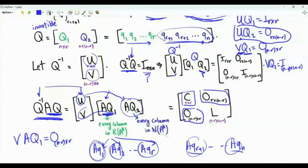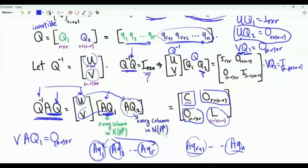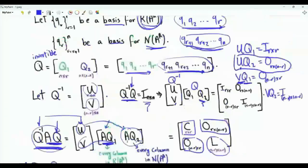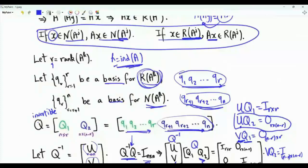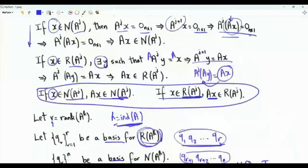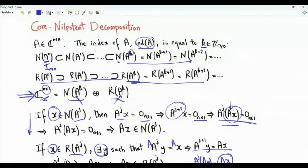The upper left block is the r by r matrix C, which equals U times A times Q1. The lower right matrix L is a square matrix of size n minus r by n minus r, given by V times A times Q2. Using matrix Q — which contains a basis for the r-dimensional range of A to the k and the n minus r dimensional null space of A to the k — we are able to block diagonalize matrix A. Note that k is not an arbitrary integer; k is the index of A.